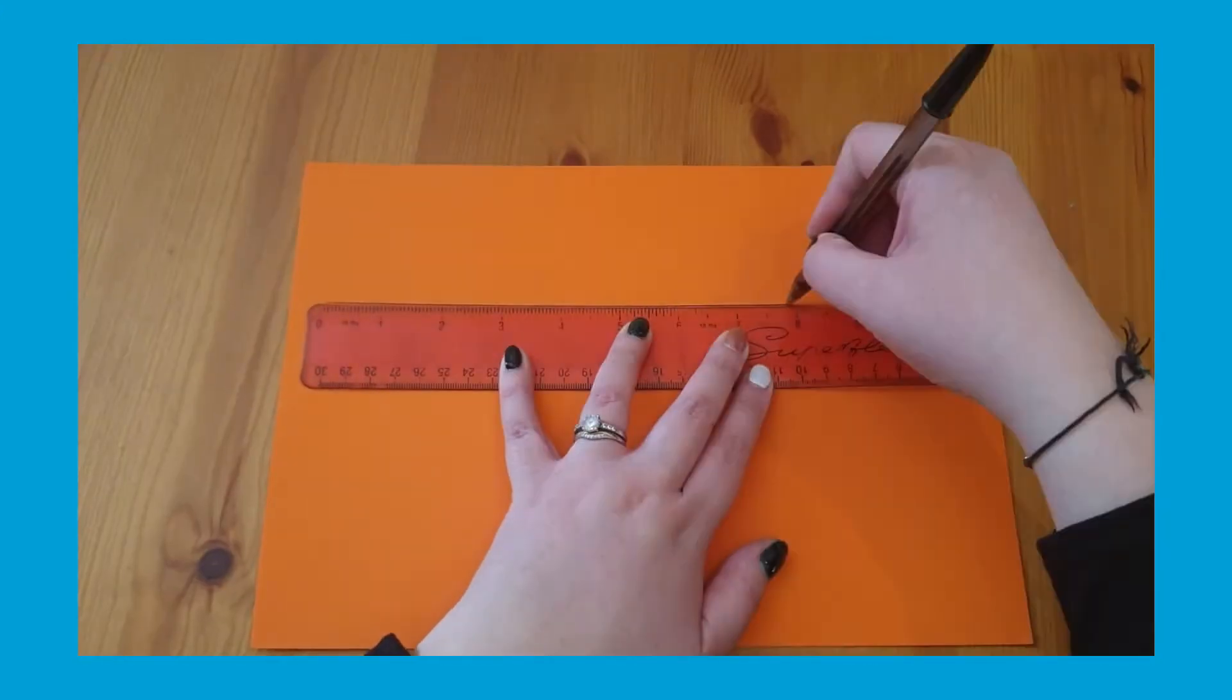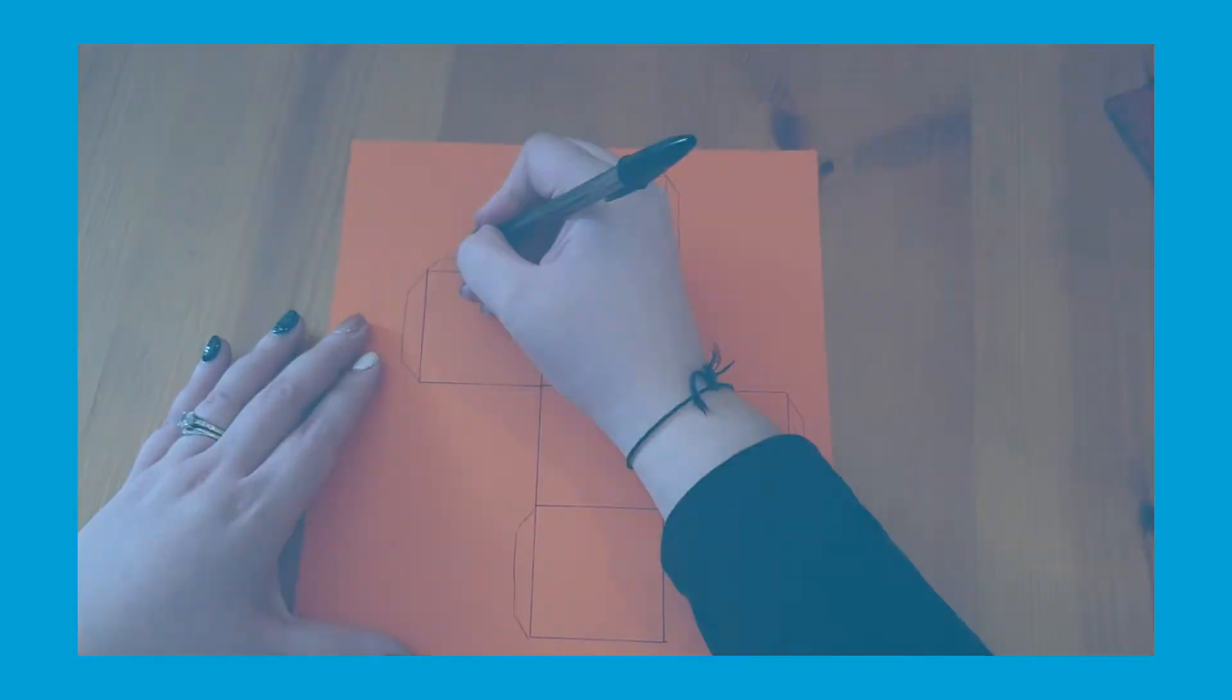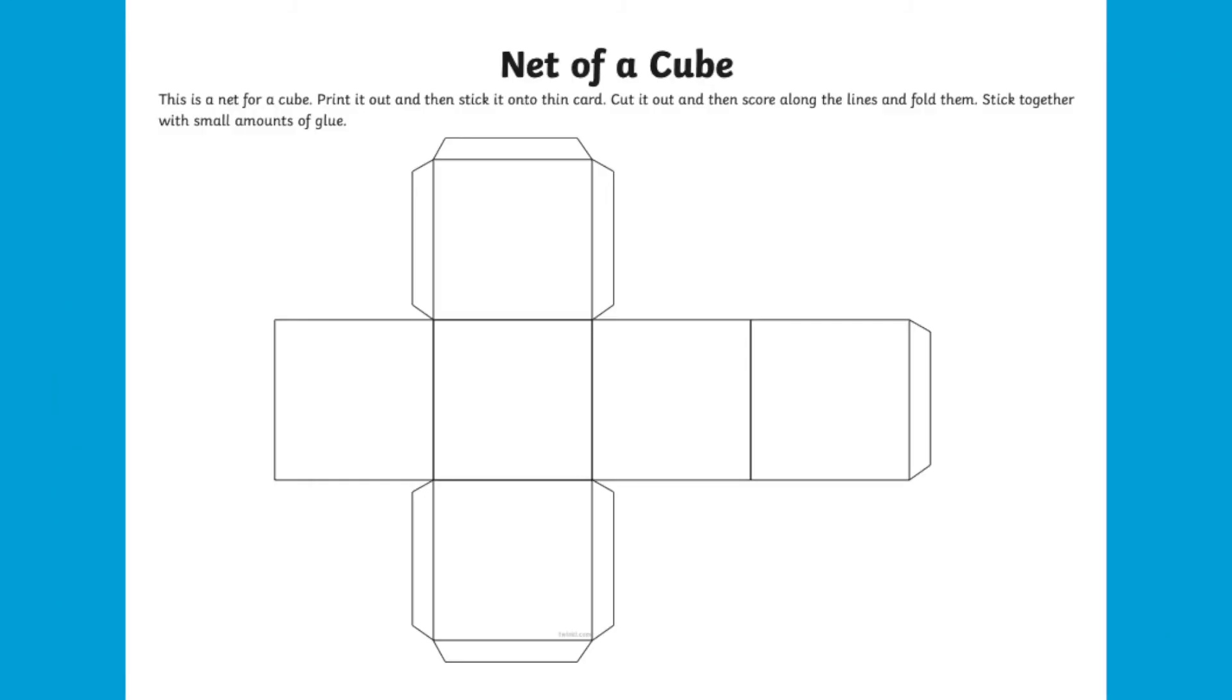If you wanted to make a 3D shape, you could draw the net on paper and then construct it yourself, or print some of the many fantastic 3D shape nets we have on the Twinkle website.